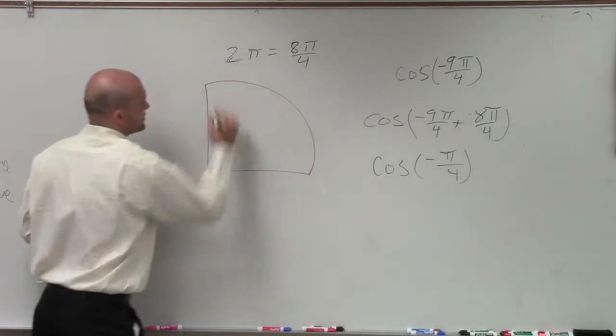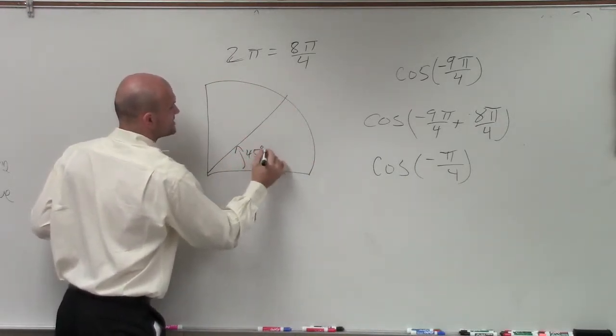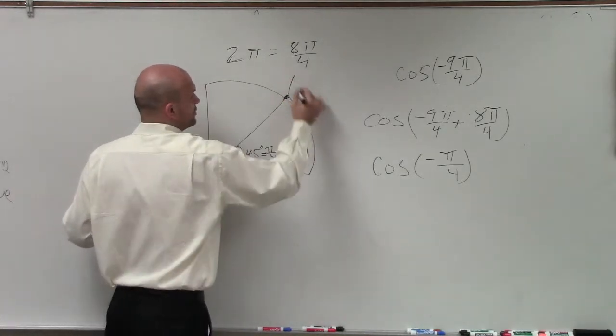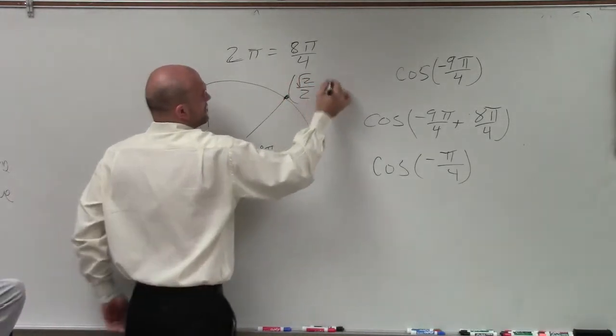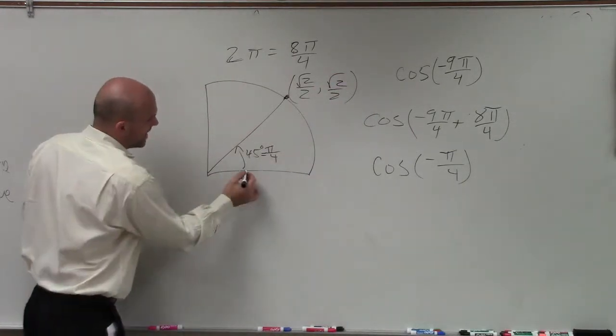Well, going back to my first quadrant, I know that this angle, which is 45 degrees, is the same thing as pi over 4. And this point on the unit circle is square root of 2 over 2, comma, square root of 2 over 2.